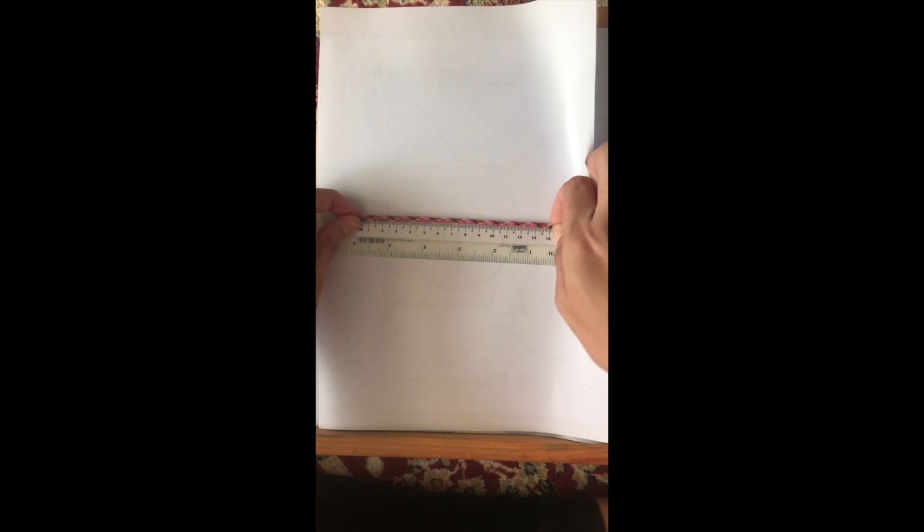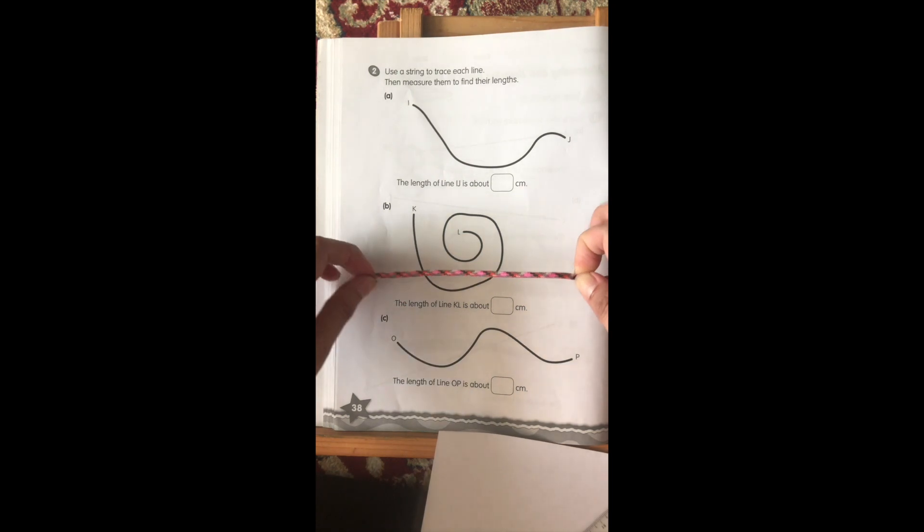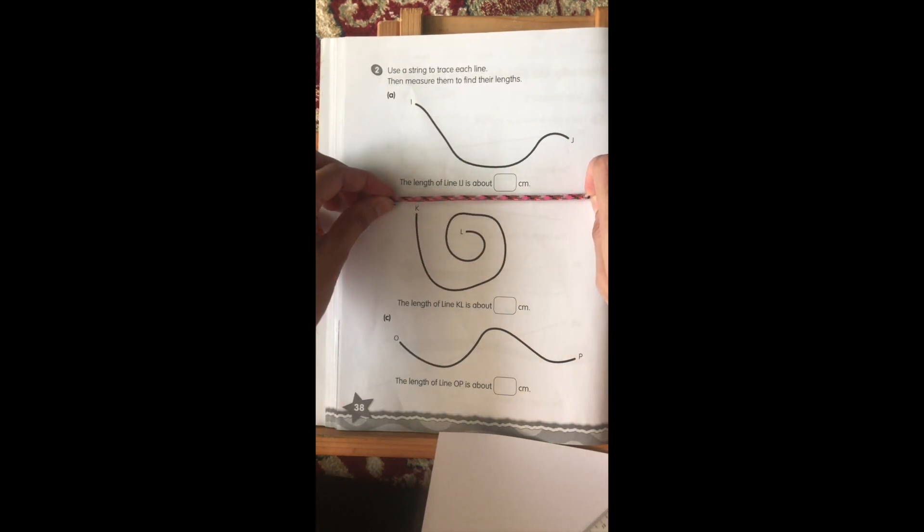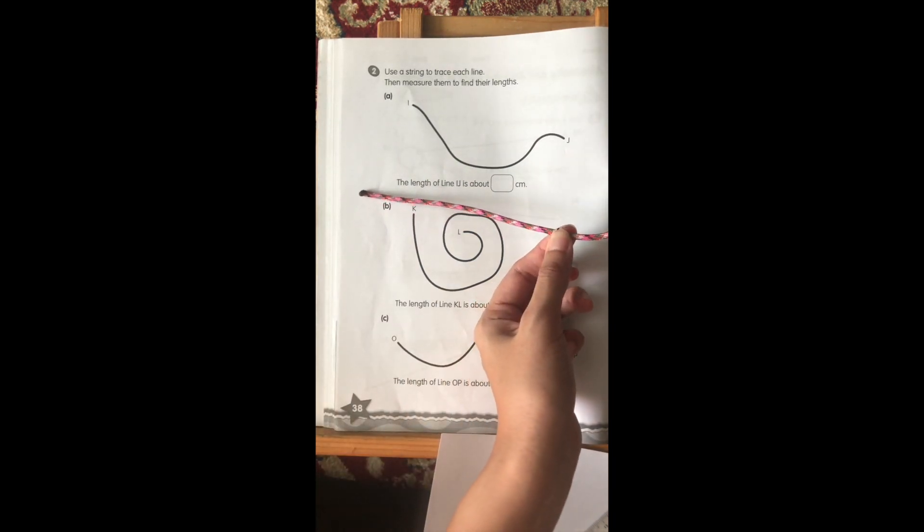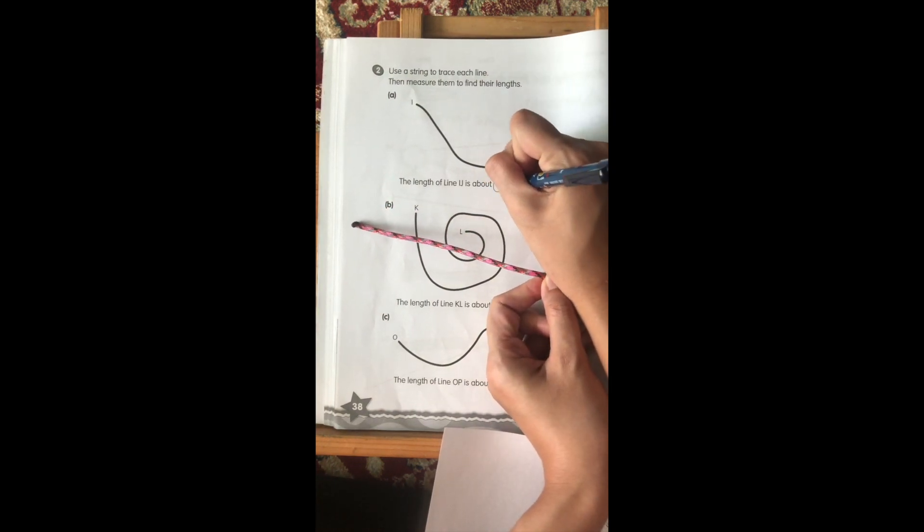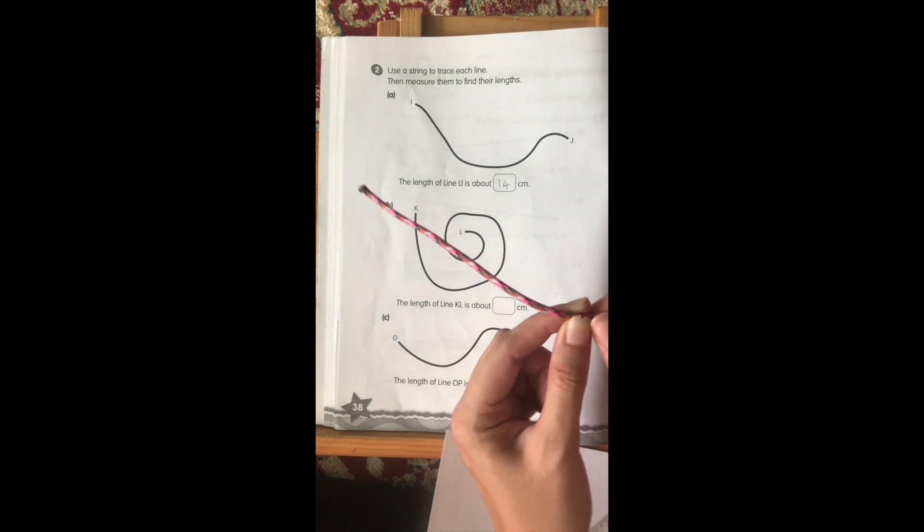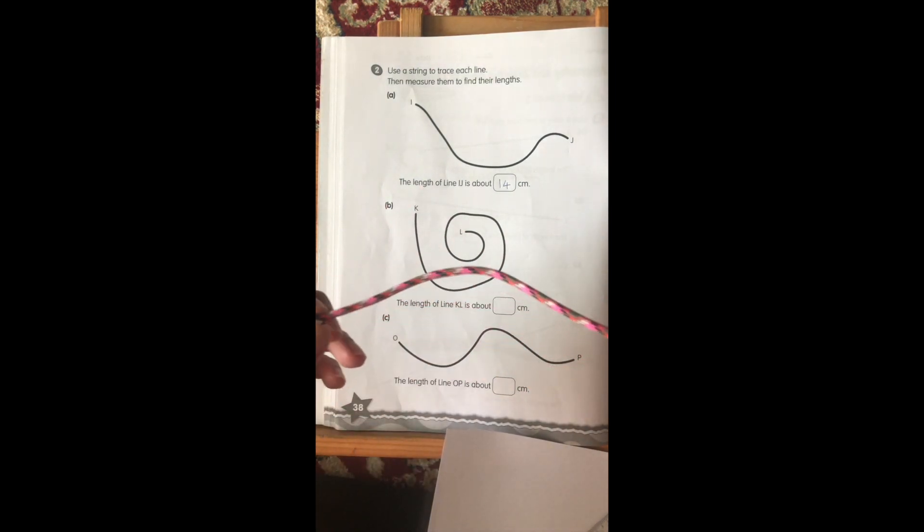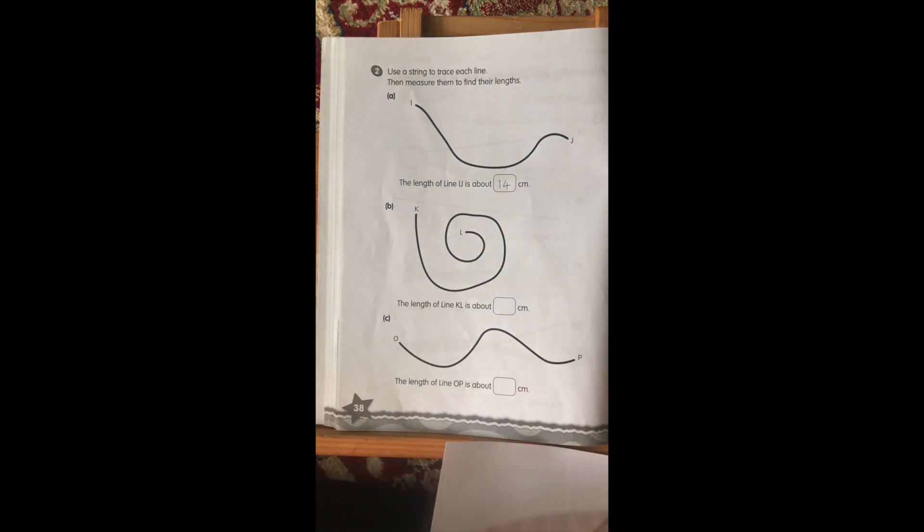That means this line is 14 centimeters long. So, the length of IJ is about 14 centimeters long. So, that is how you are able to use a string to find the length of this line.